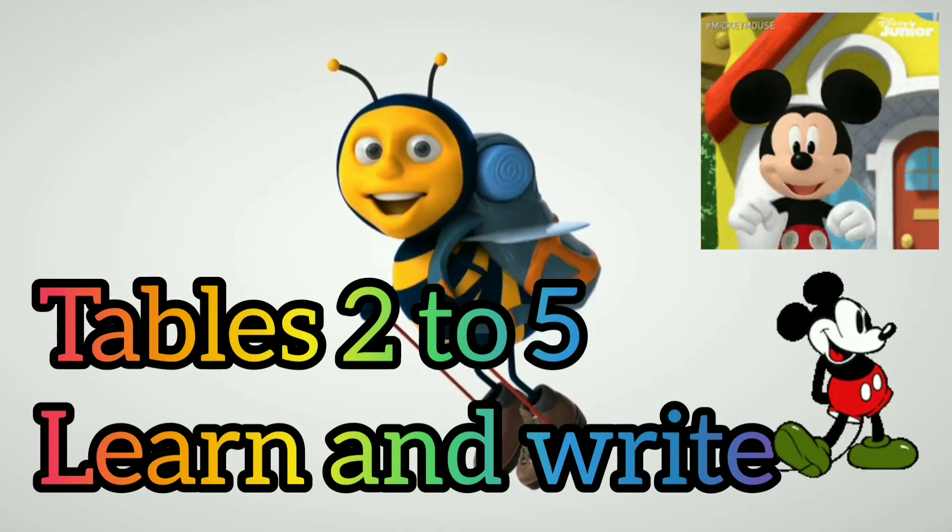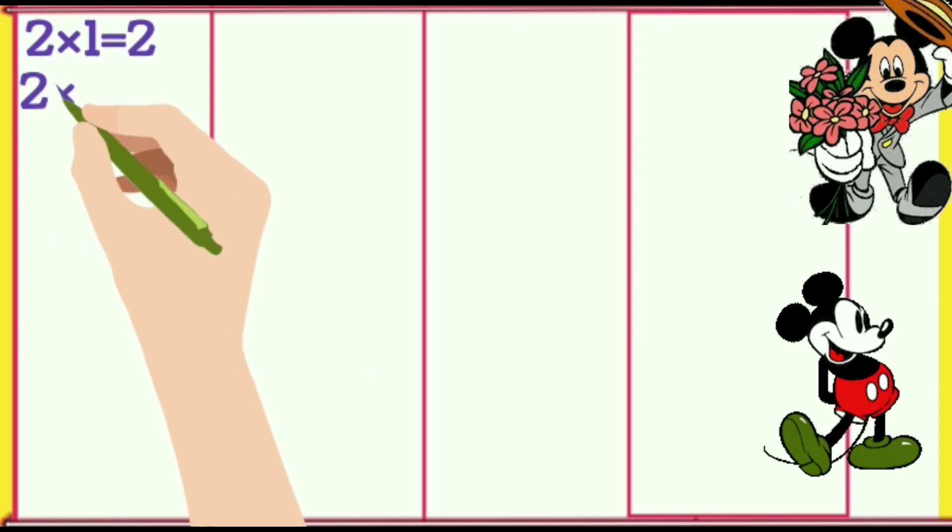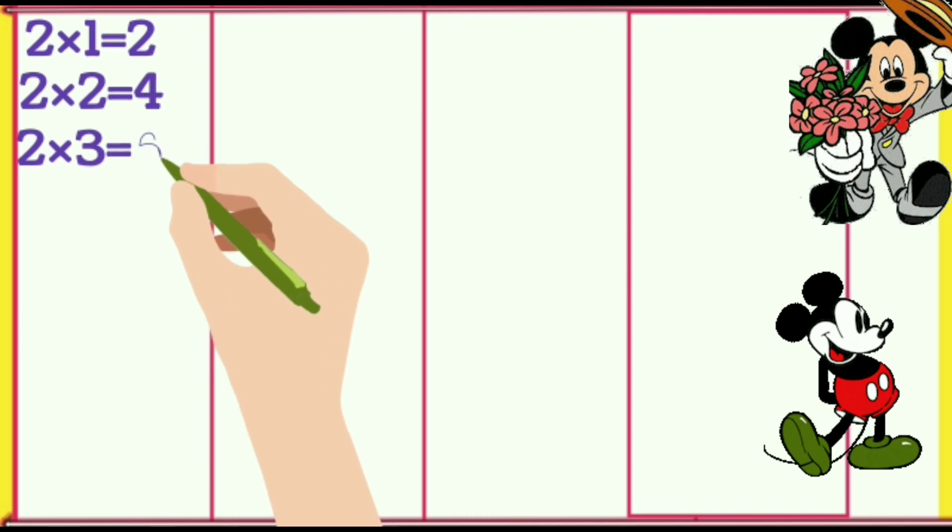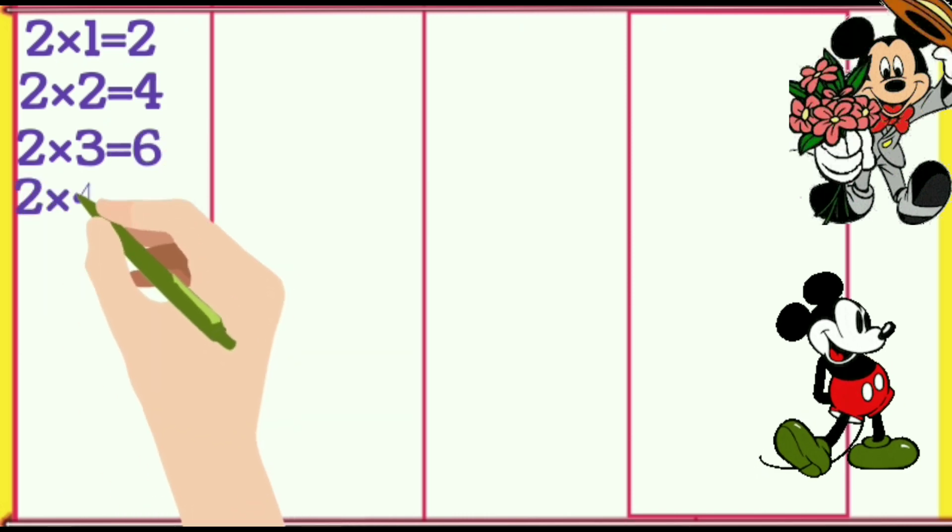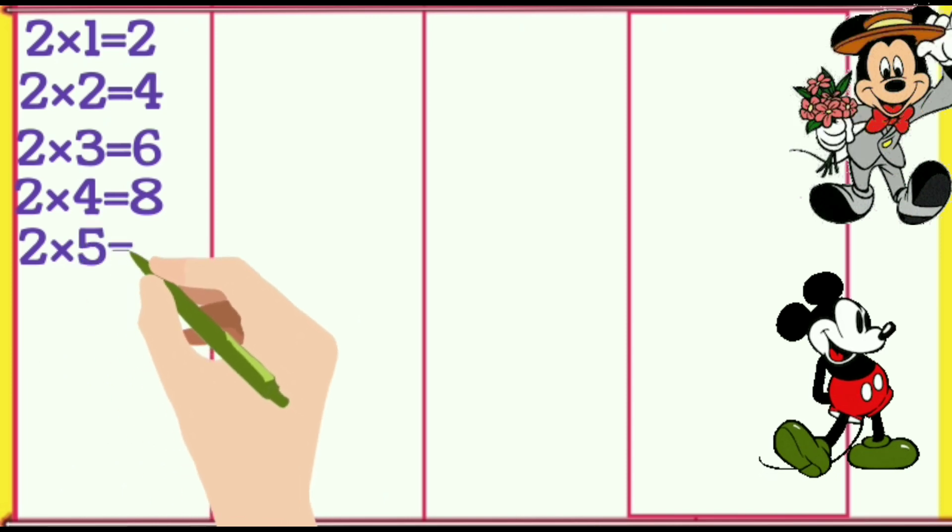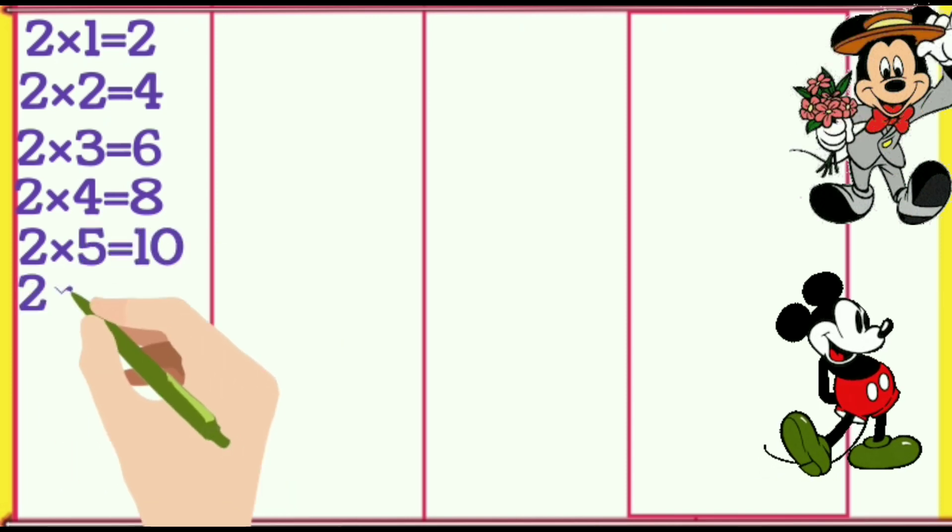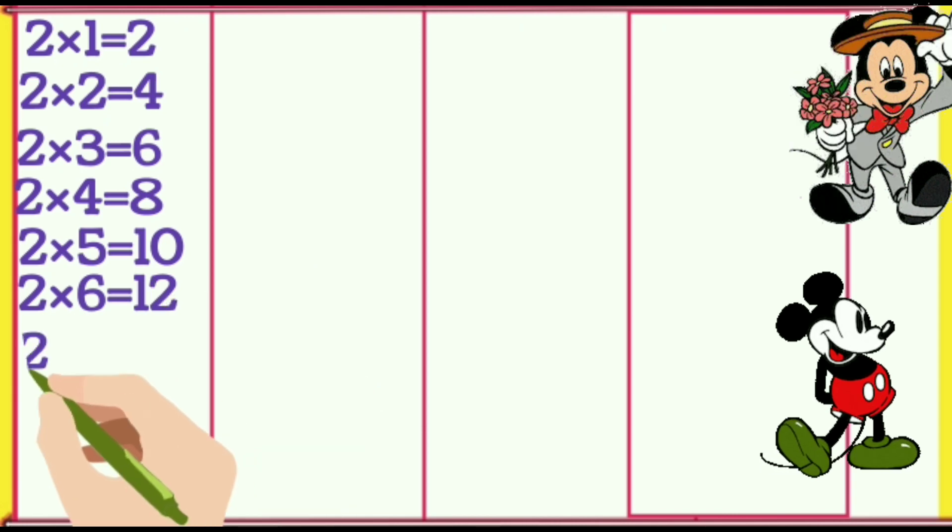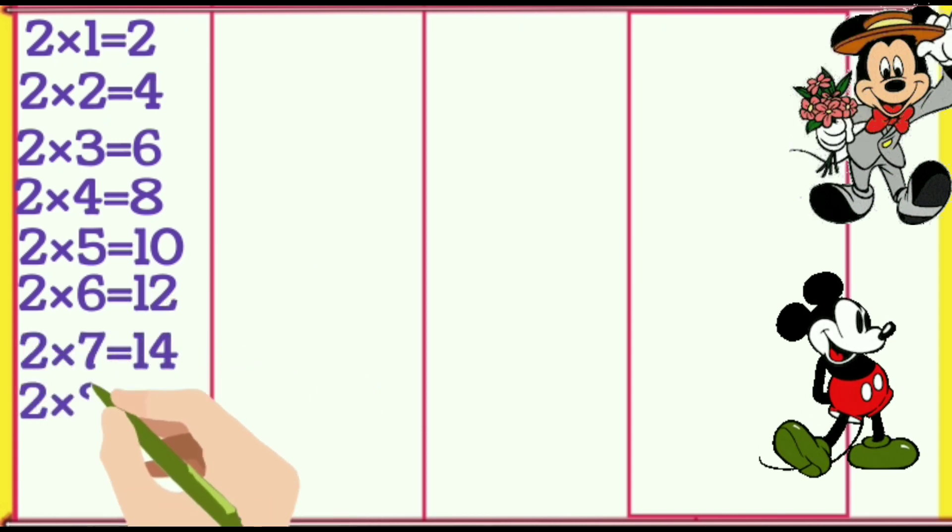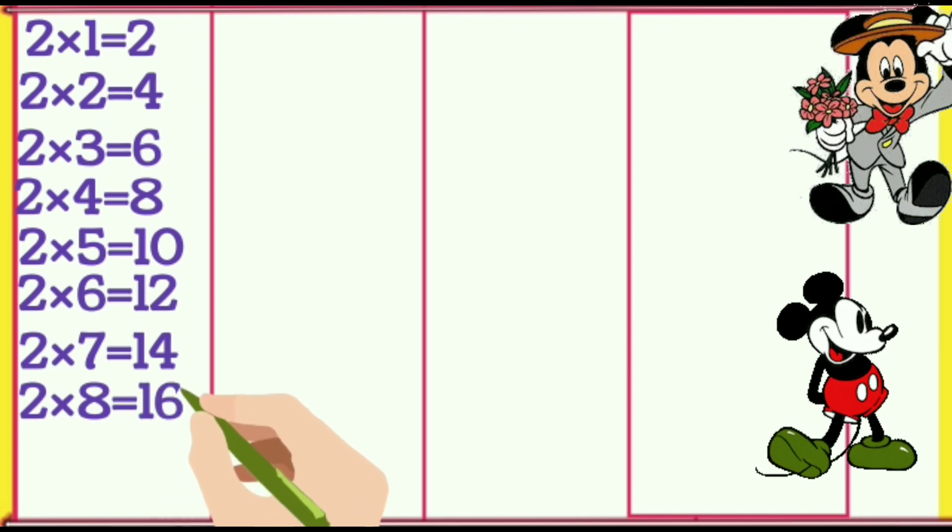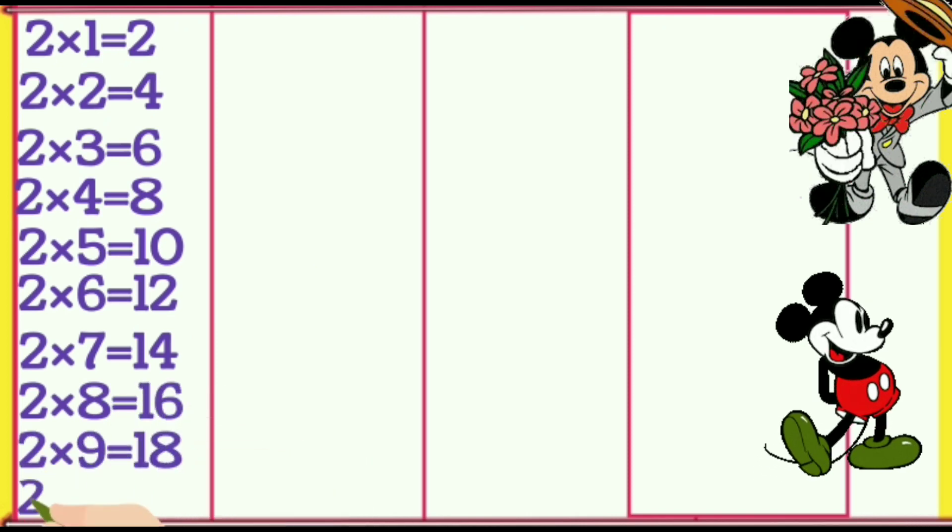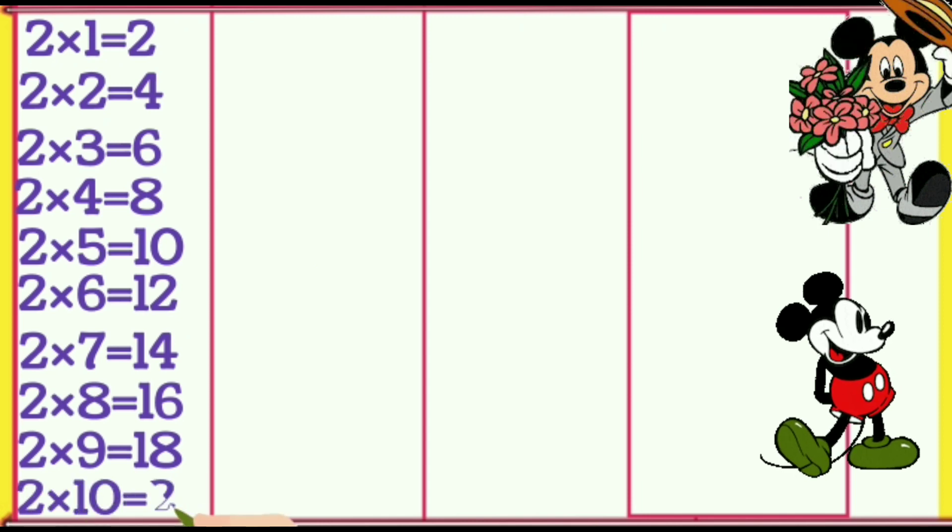Learn and write. 2×1=2, 2×2=4, 2×3=6, 2×4=8, 2×5=10, 2×6=12, 2×7=14, 2×8=16, 2×9=18, 2×10=20.